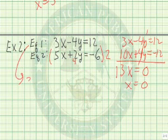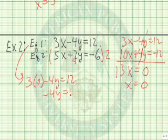Let's take the first equation again. Replace x with 0 this time. And now we need to figure out the value of y. So we have negative 4y equals 12. Divide both sides by negative 4. So y equals negative 3.